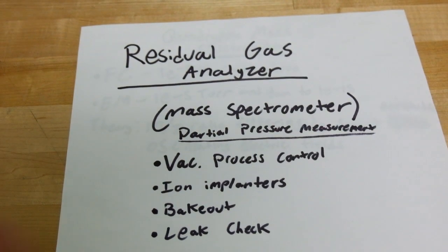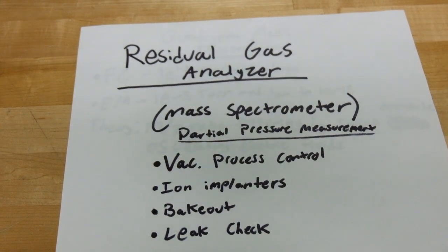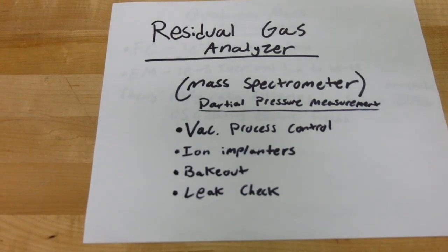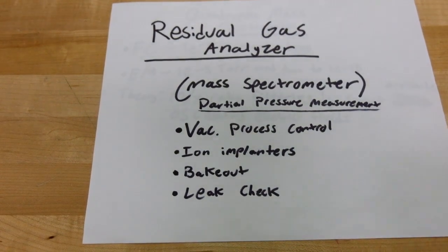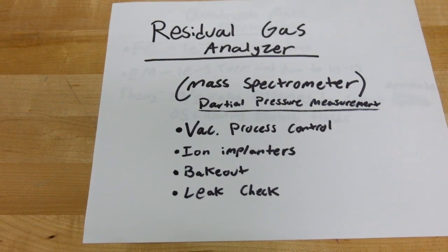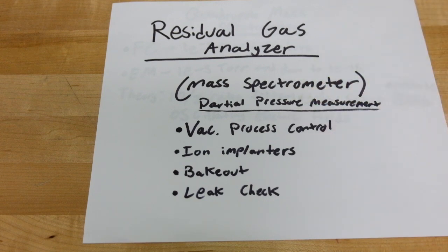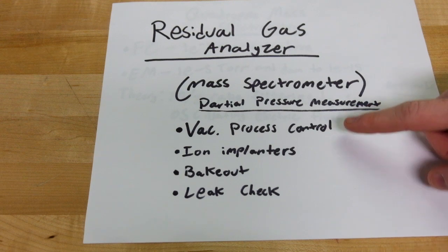In case you're not familiar with RGAs, a residual gas analyzer is basically a tiny mass spectrometer that you'll see on vacuum chambers. Most instruments, like vacuum gauges of different types, measure the total pressure in the chamber, but this is special because it allows you to see partial pressures. It'll print out on the computer a graph of all the different gases and species you have in the chamber and the partial pressure of each of those.